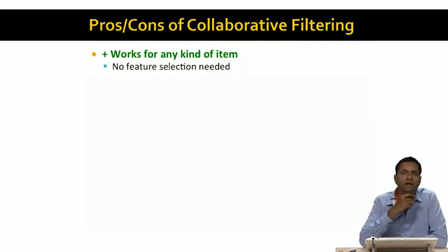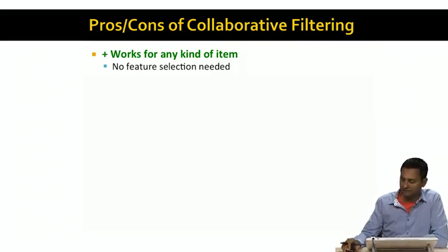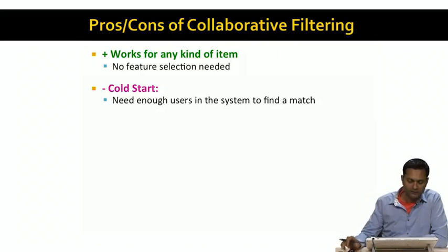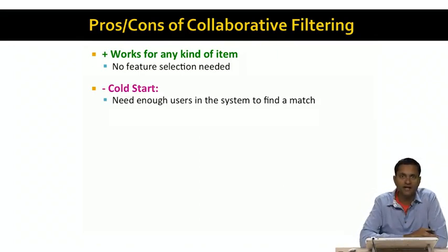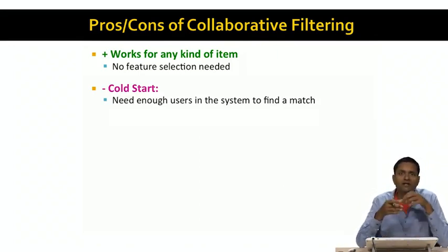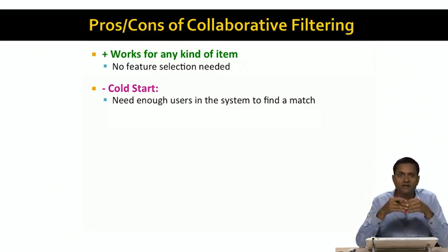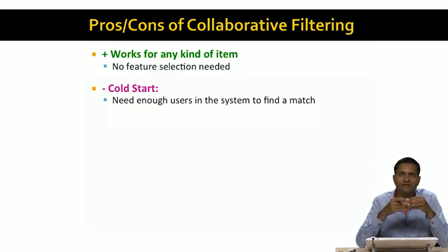That said, collaborative filtering also has a number of disadvantages. The first of these is cold start. For collaborative filtering to work, you need enough users in the system who have rated enough items. Given an item, we have to find a set of other similar items; given a user, we have to find a set of other similar users. But if there are not enough users in the system, it's hard to find a match.